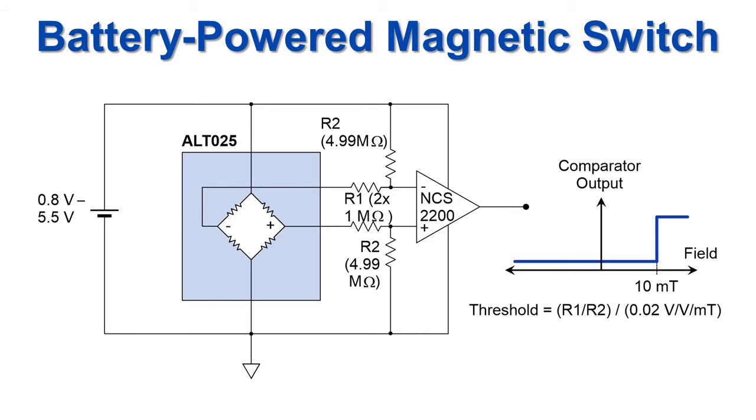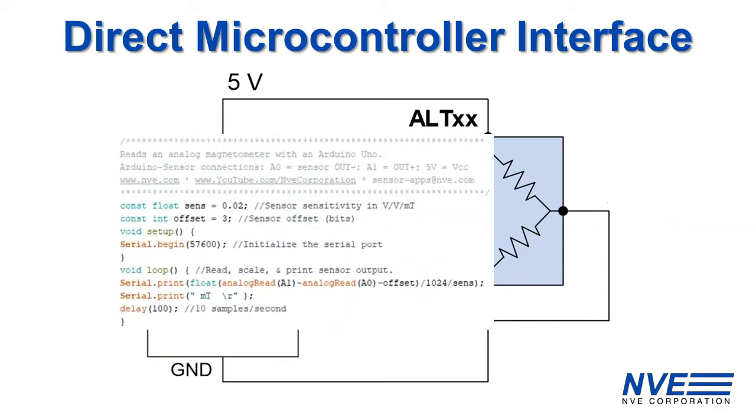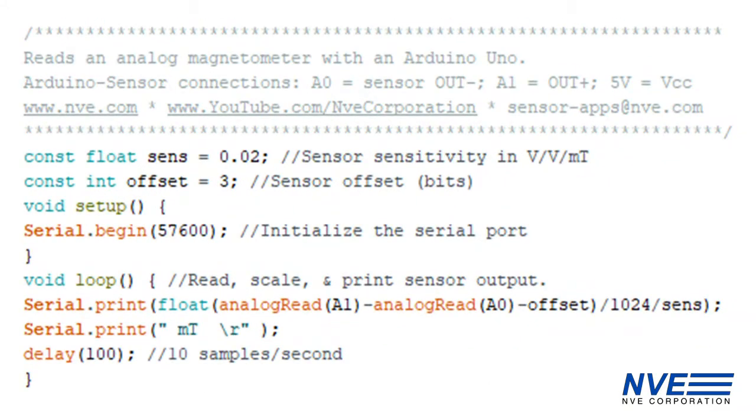These sensors' large signals and low output impedances allow direct interface to microcontrollers. Here's a simple Arduino sketch to read an ALT-025.